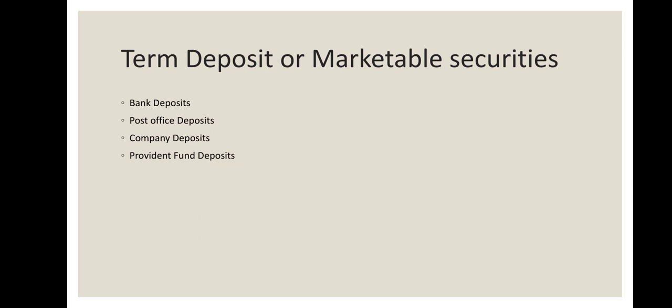The first type is fixed deposit. As the term implies, the deposit is fixed for a certain period — five years, three years, ten years, and so on. For every year they are going to provide interest. The interest may be six percent, and it differs between general people and senior citizens.